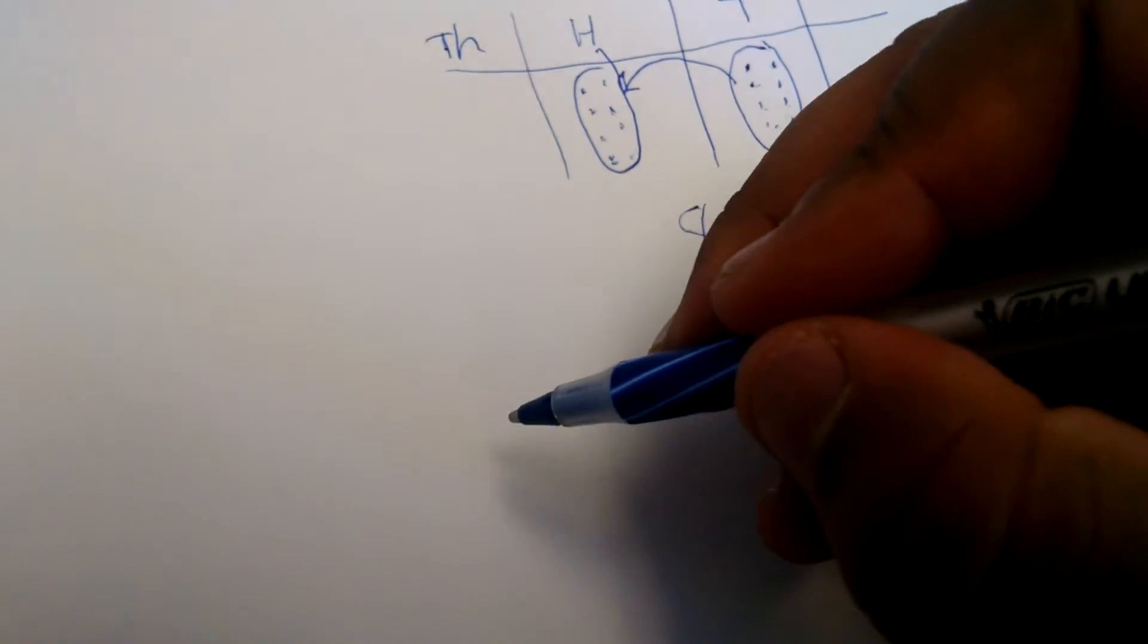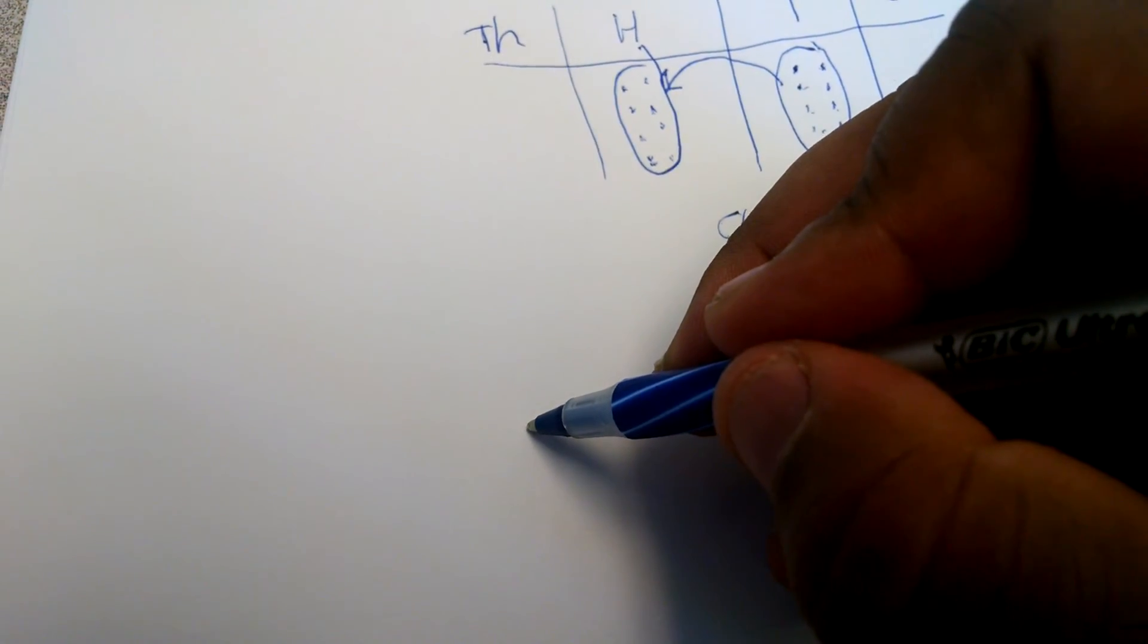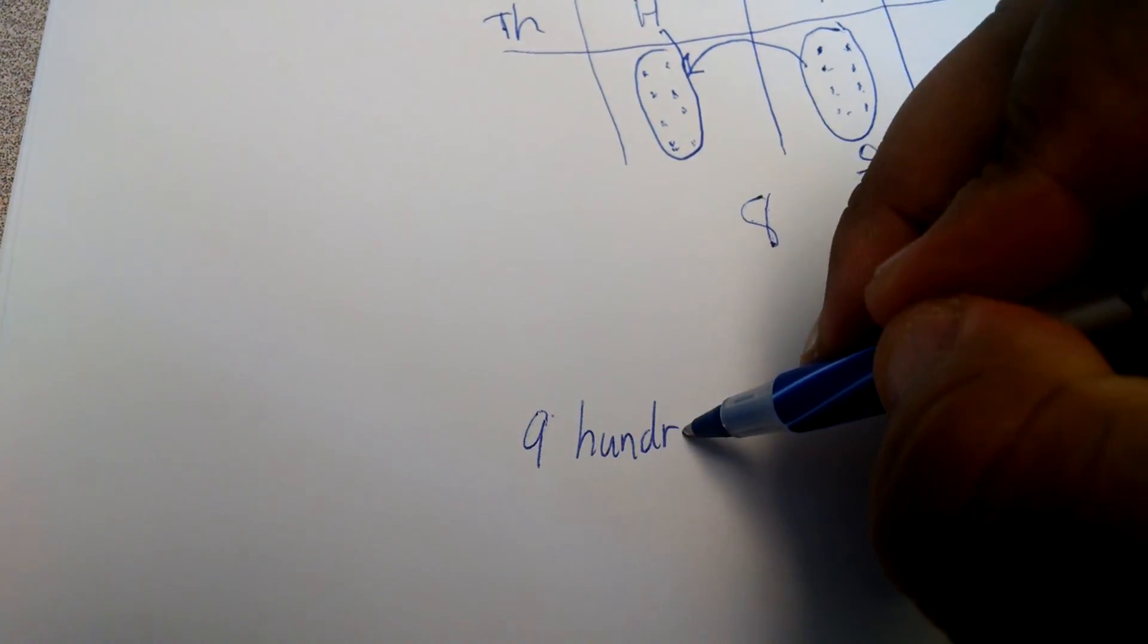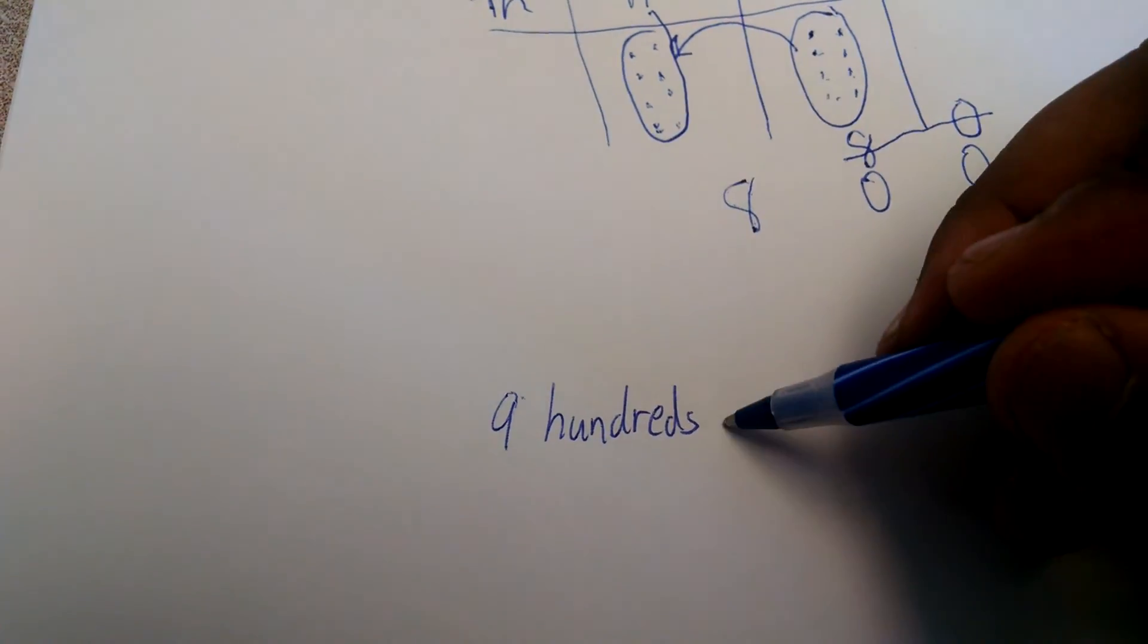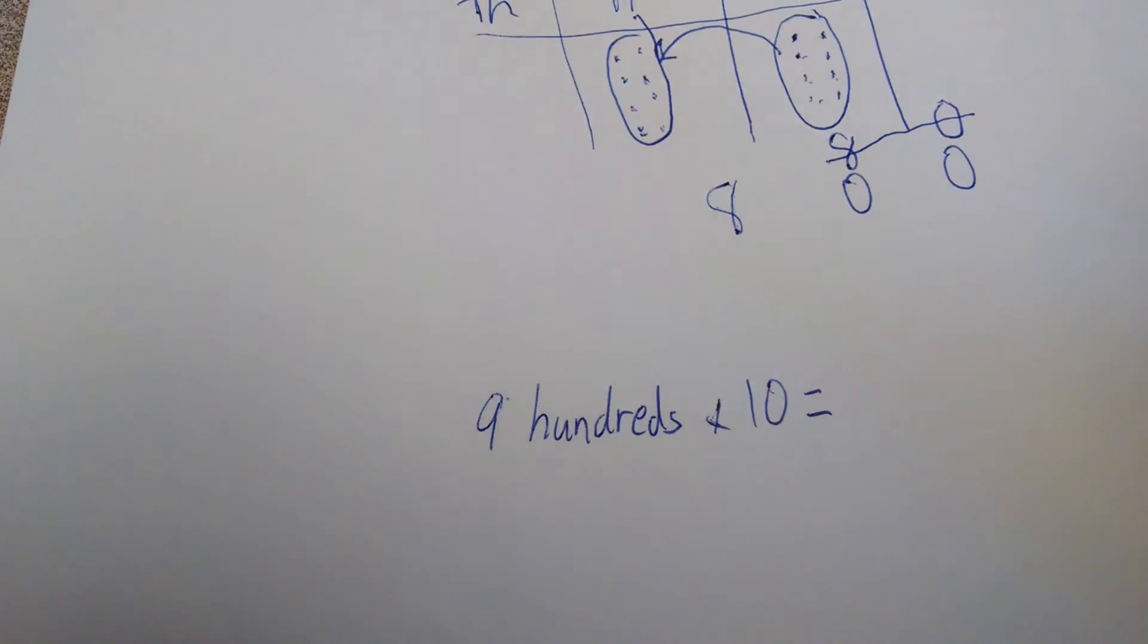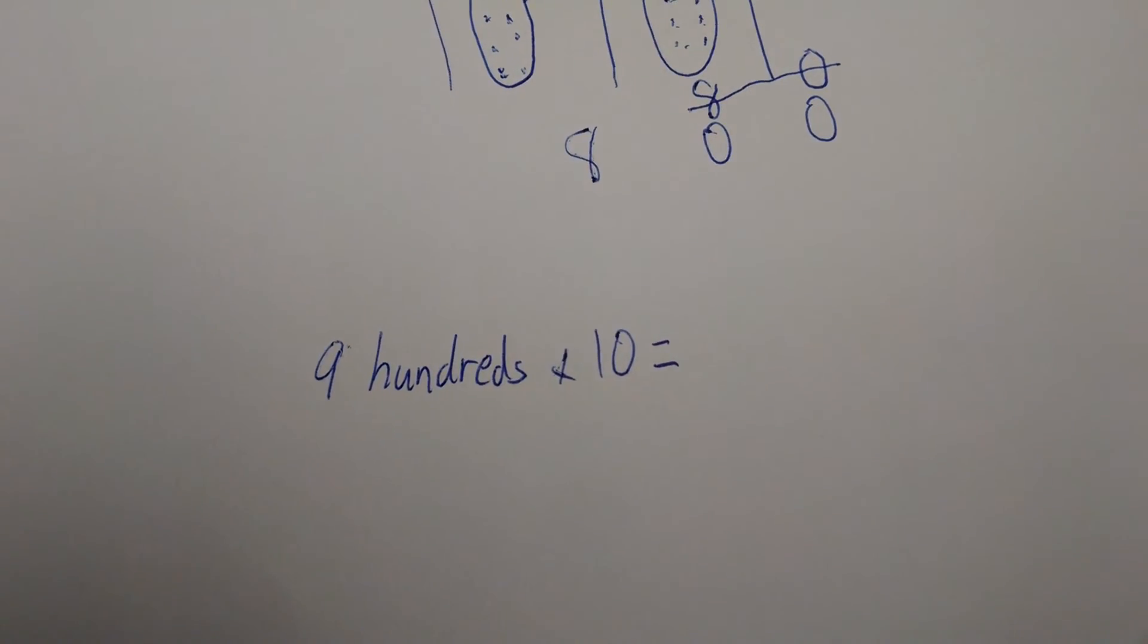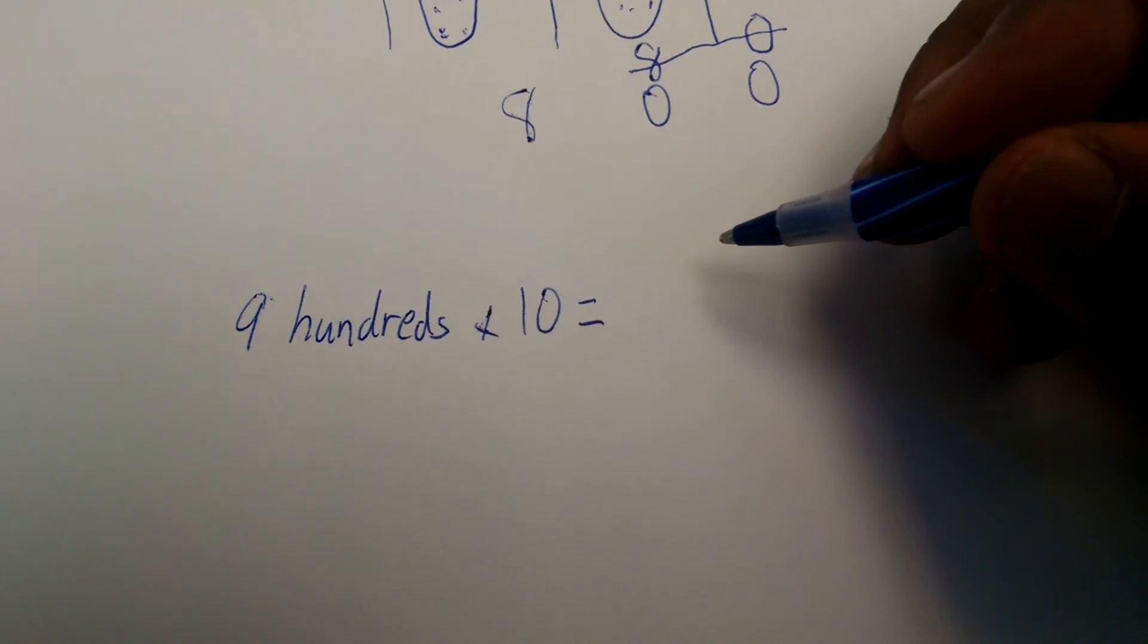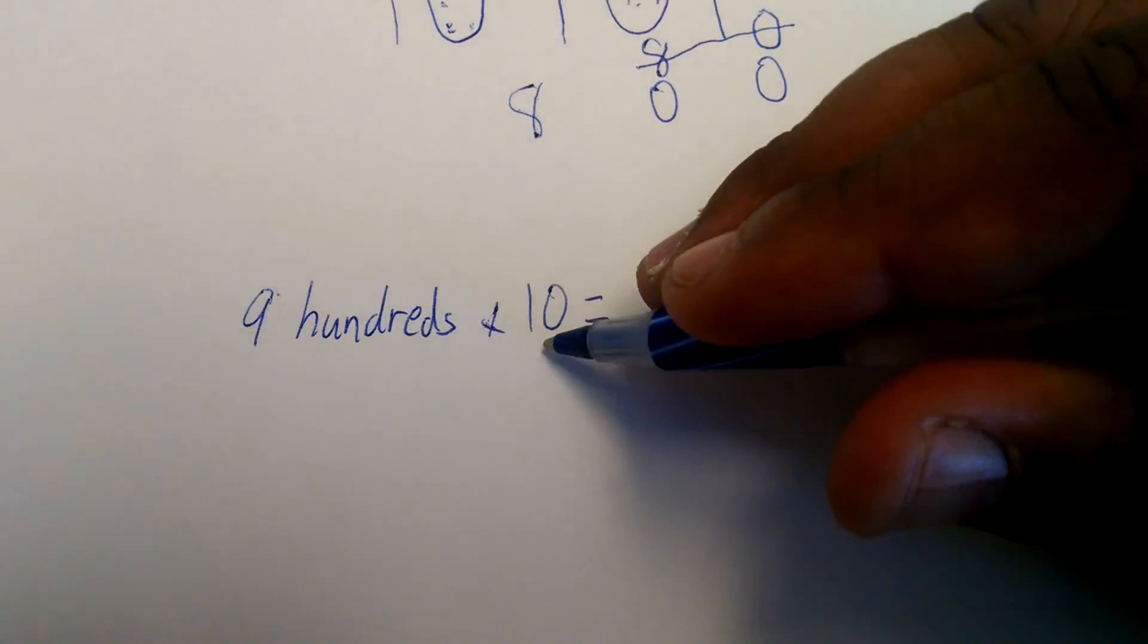So if I had, let's say, 9 hundreds times 10, what would that equal? Well, I know 10 times 9 is 90. 90, and I have 90 hundreds. That's the unit that I'm working with.